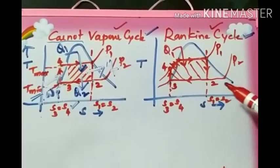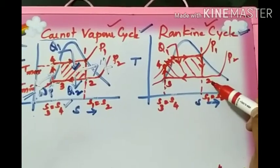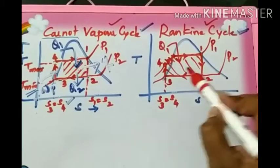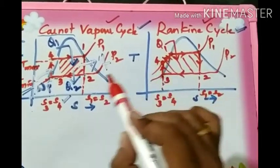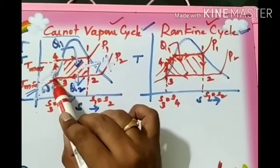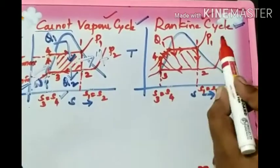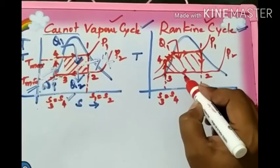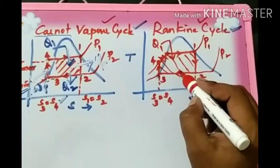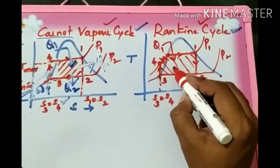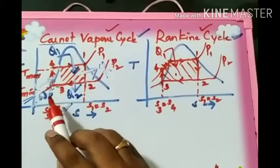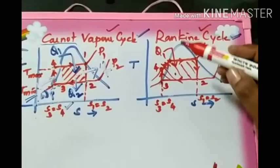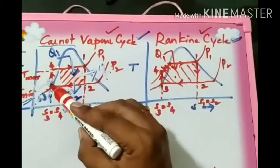Similarly, looking at process 2 to 3 in the Rankine cycle — condensation occurs for the wet steam so that it converts into saturated water, which is also true for the Carnot cycle. However, during condensation in both cycles, the temperature has to remain constant, which does occur in both cycles.